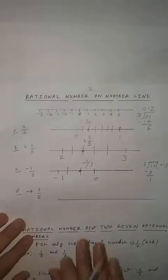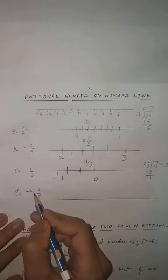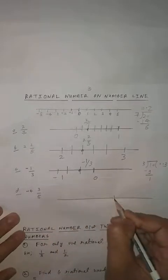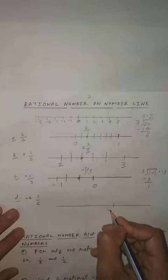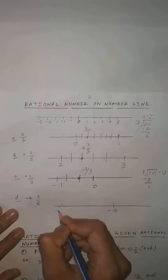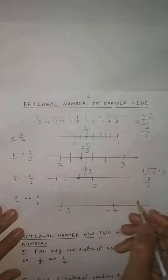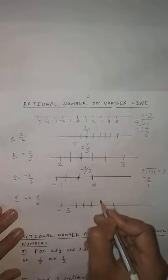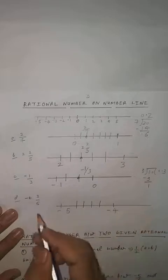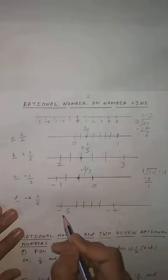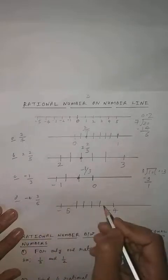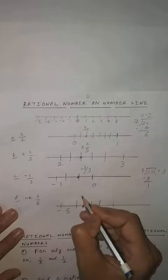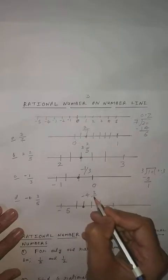The last example is minus 4 whole 3 by 5. You can easily say minus 4 is given, so the number line will be between minus 4 and minus 5. Write down minus 4 here and minus 5 here. Now the denominator is 5, so you will divide into 4 equal parts: 1, 2, 3, 4. You want 3 by 5 — the first part is 1 by 5, the second part is 2 by 5, and the third part is 3 by 5. So here you will write down minus 4 whole 3 by 5.